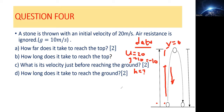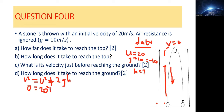Since no time has been given, we make use of this equation: final velocity squared equals initial velocity squared plus two times the pull of gravity times the height. We plug in the values: final velocity is zero, initial velocity is 20 squared, plus two times the pull of gravity which is negative 10, times the height h.